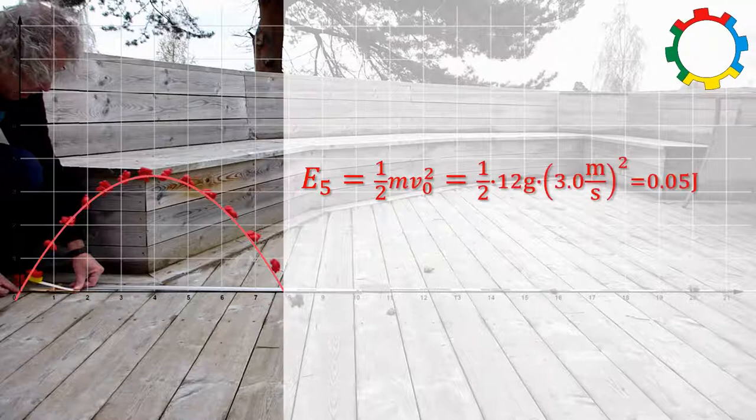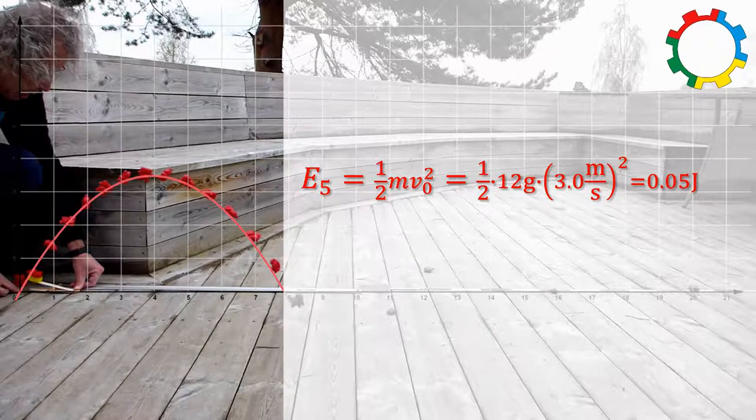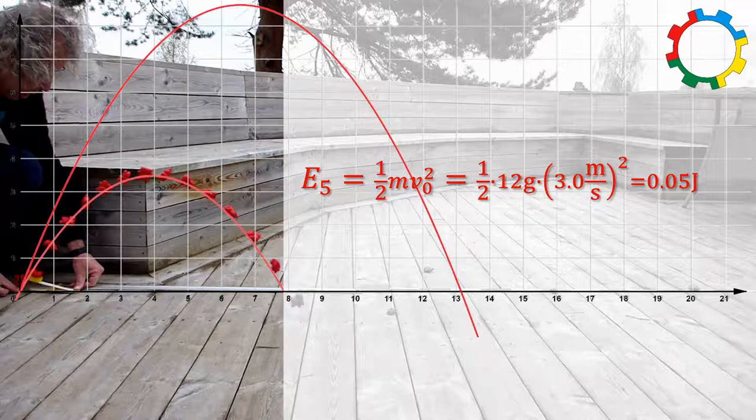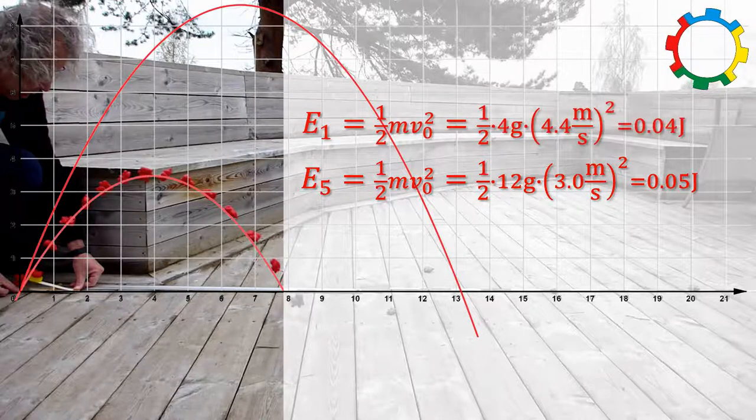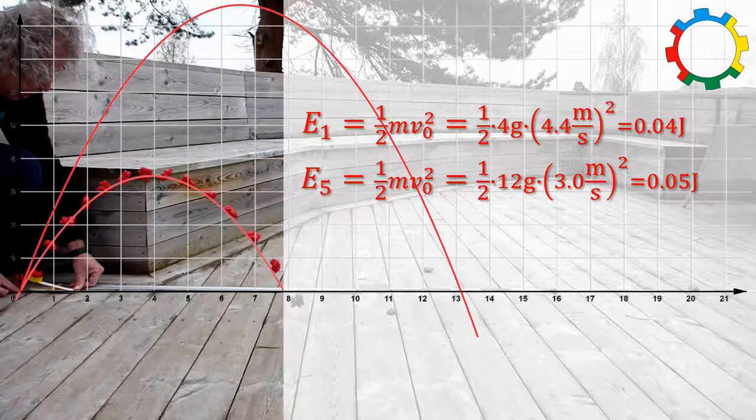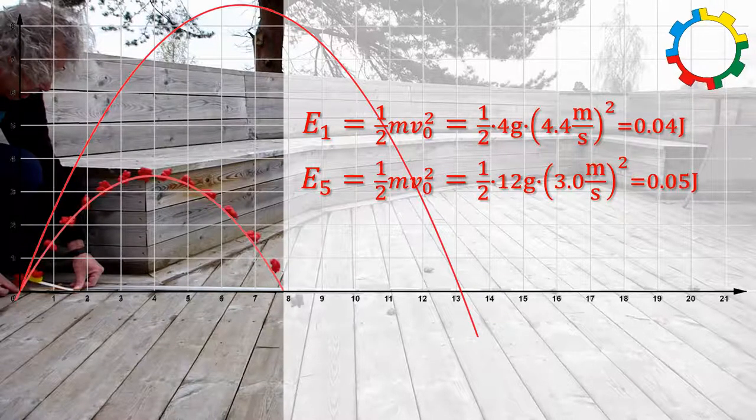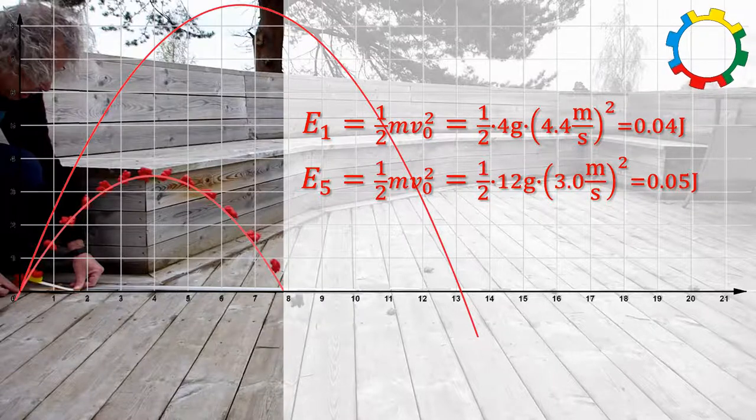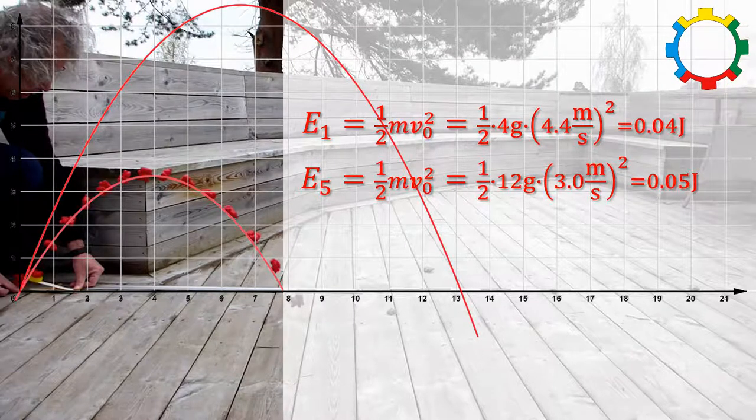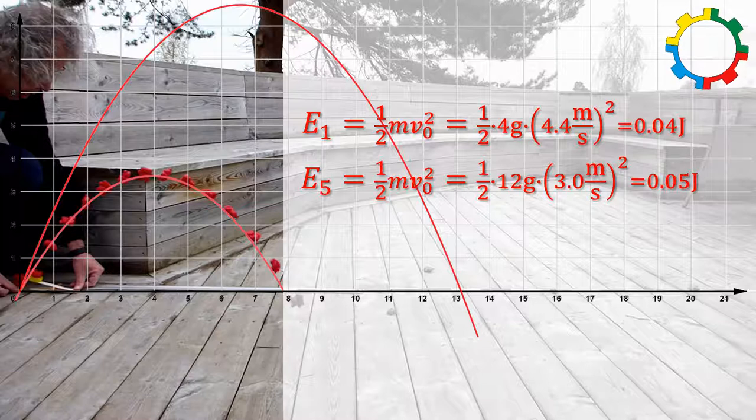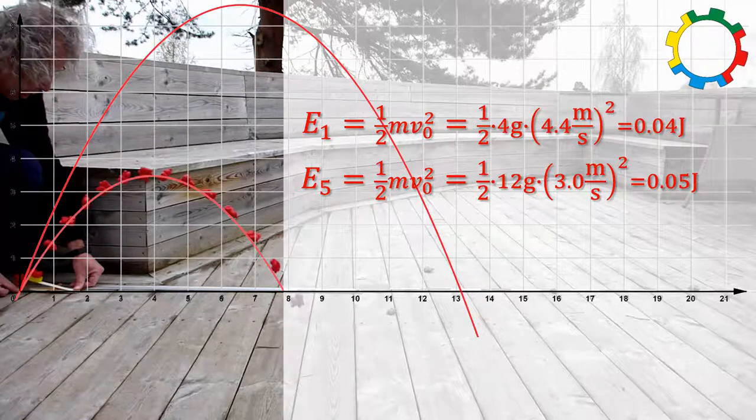The velocity we can use to calculate the energy. Now we can compare the energy of the fifth bear with the energy of the first bear. We do not get exactly the same amount. An explanation for this is air resistance. Air resistance is proportional to the square of the velocity. That means the faster bear meets higher resistance and loses energy to the air. Therefore, its initial energy seems to be less.